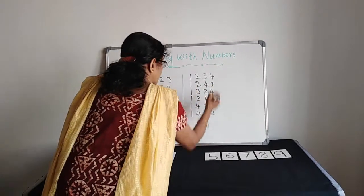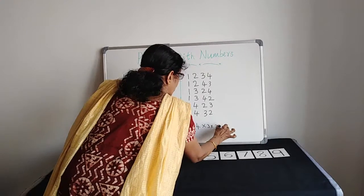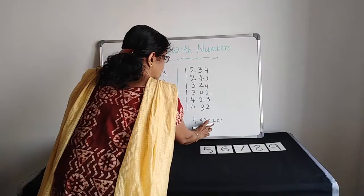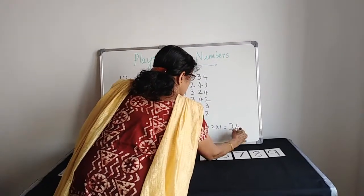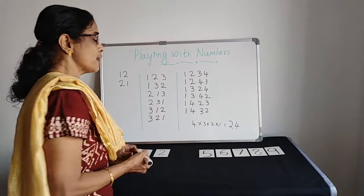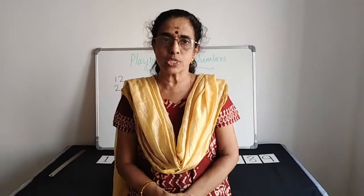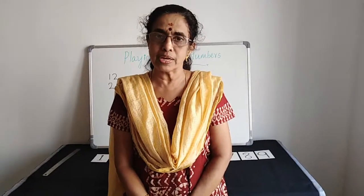Because we used 4 cards. 4 into 3 into 2 into 1. That many numbers we can make. 4 into 3 is 12. 12 into 2 is 24. 24 times 1 is 24. So we can make 24 numbers. We can make 24 numbers using 4 cards, 4 digit numbers without repeating the digit.